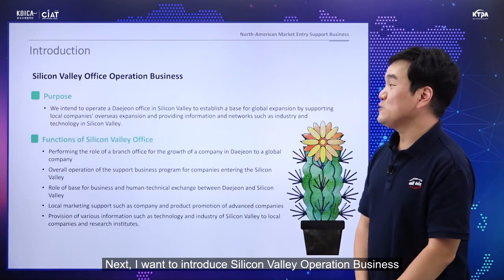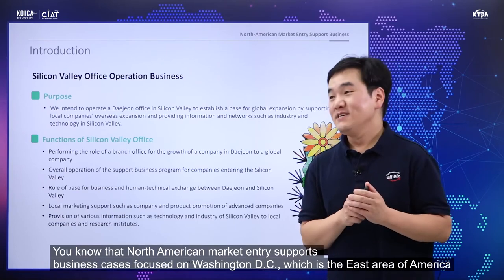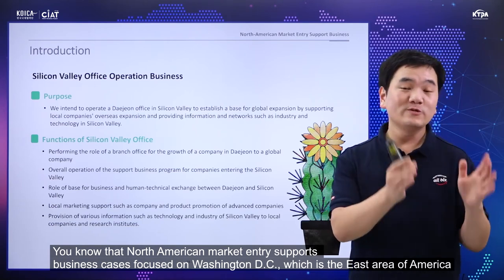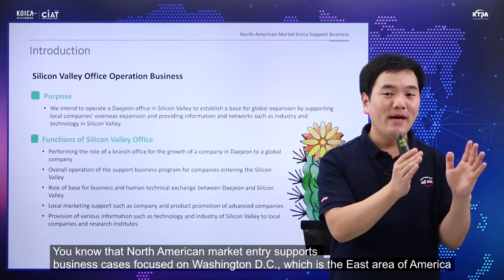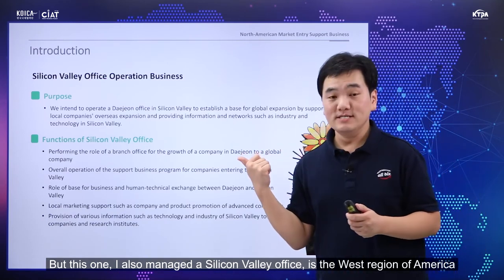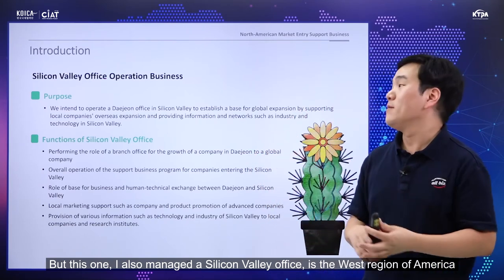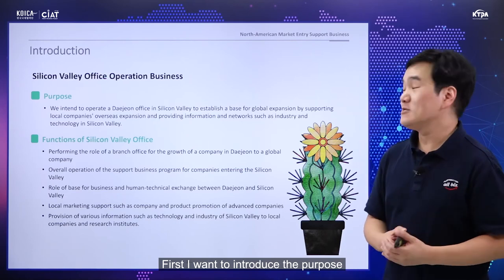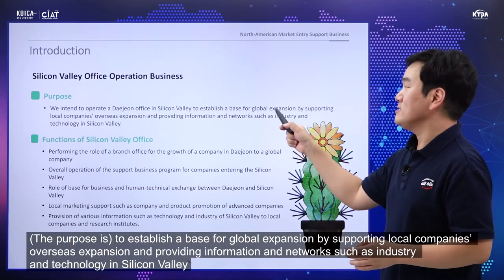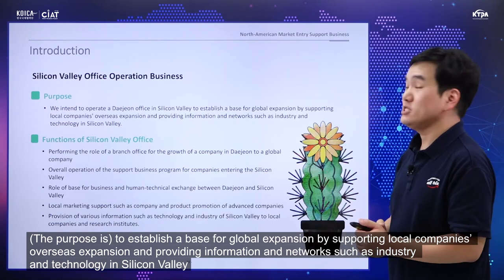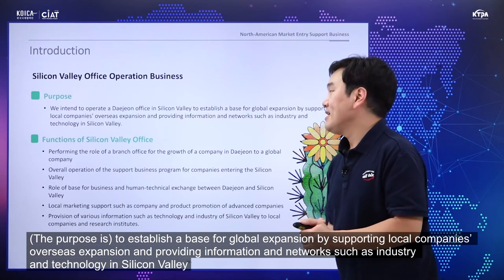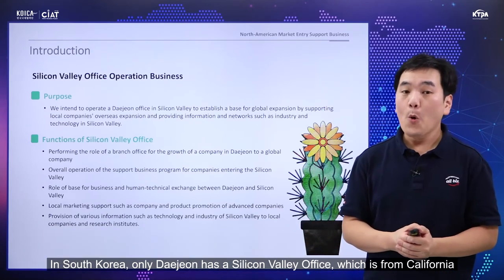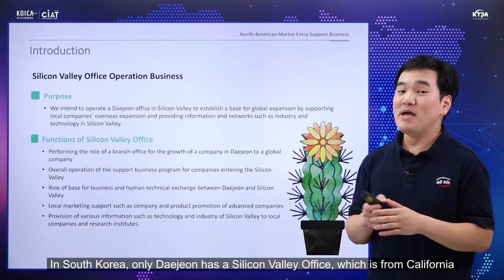I want to introduce the Silicon Valley office operation business. The North American market entry support business is focused on Washington D.C. — the east area of America. But I'm also managing the Silicon Valley office, which is in the west region of America. The purpose of the Silicon Valley office is to provide a base for global expansion by supporting local companies' overseas expansion and providing information and networks about industry and technology in Silicon Valley. In South Korea, only Daejeon has a Silicon Valley office in California.